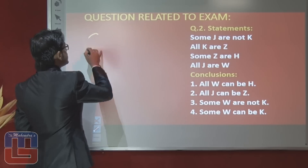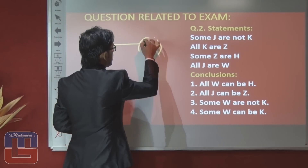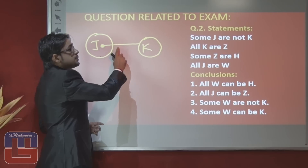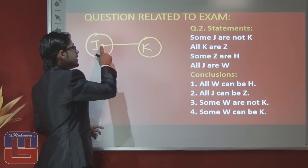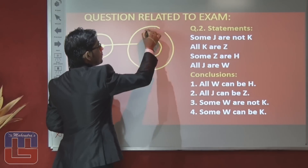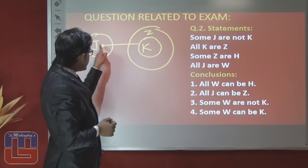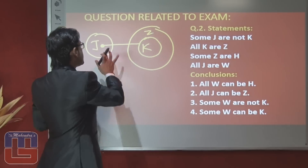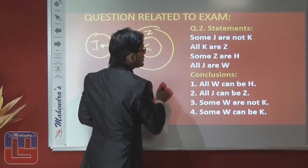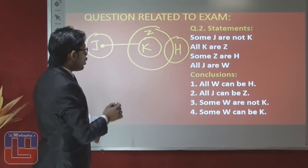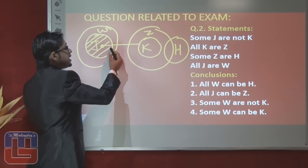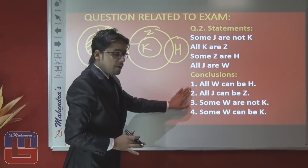Question 2 statements: 'Some J are not K' — some negative, single-side relation only; 'all K are Z' — still we don't have information about J to Z; 'some Z are H'; 'all J are W.' In this circle, all J exist within W and some W exists here. Conclusion 1: 'All W can be H' — no information is given regarding W to H, so all possibilities are true; answer is true.